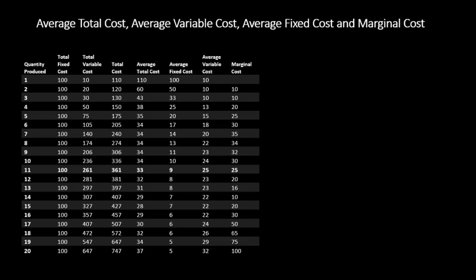Now let's go into a bit more detail. In this table, I have calculated the average total costs, average fixed costs, average variable costs, and marginal costs. Average total cost equals total cost divided by the quantity produced. For example, 120 divided by the quantity produced gives me 60. Likewise, average fixed cost equals total fixed cost divided by the quantity produced — so 100 divided by 2 gives me 50.